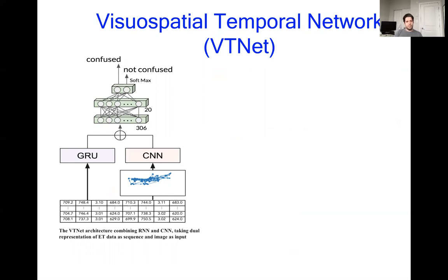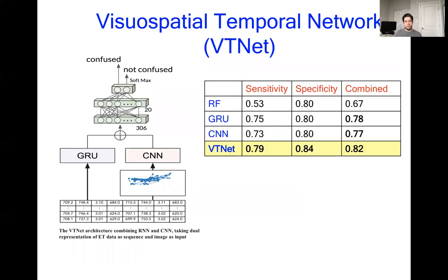last convolutional layer into a 50-element vector. We concatenate these and then process them through a simple two-layer neural network in order to classify the examples as confused or not confused. This is then trained as a single unit and we found that this gave us our best results overall.